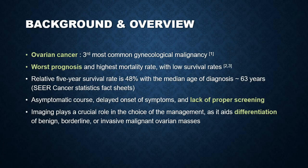Coming to the background and overview of the disease and the imaging at hand: out of all the gynecological malignancies, ovarian cancer is the third most common, after cervical carcinoma and endometrial carcinoma. However, ovarian cancer carries the worst prognosis and the highest mortality rate with very low survival rates. The SEER cancer statistics factsheets say that the relative 5-year survival rate is 48%, with a median age of diagnosis of approximately 63 years. This poor prognosis is attributable mainly to the asymptomatic course of the disease with delayed onset of symptoms and a lack of proper screening modalities.